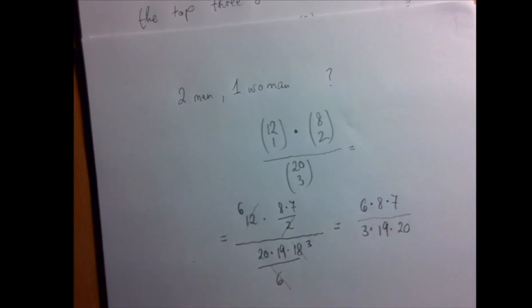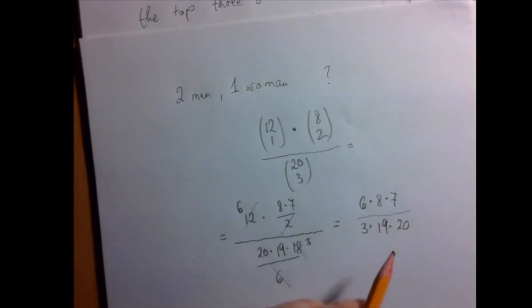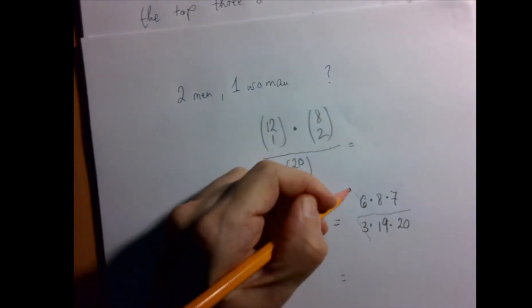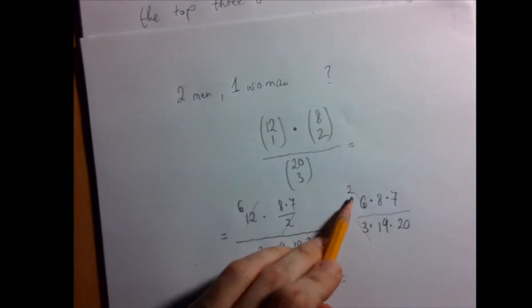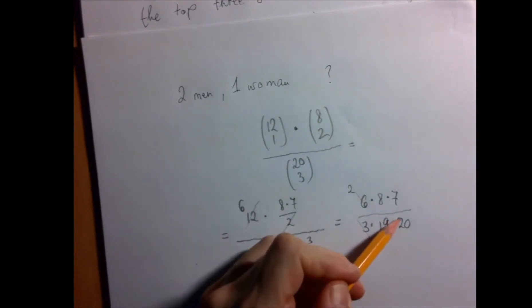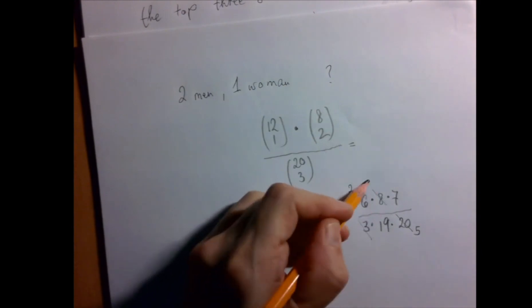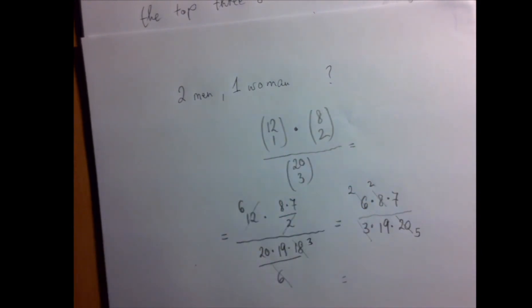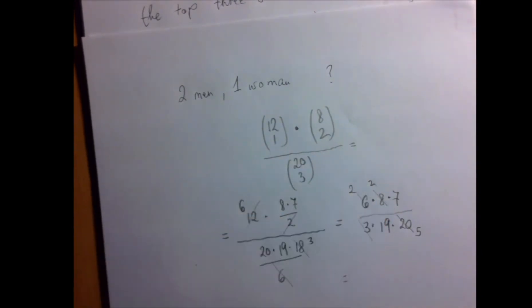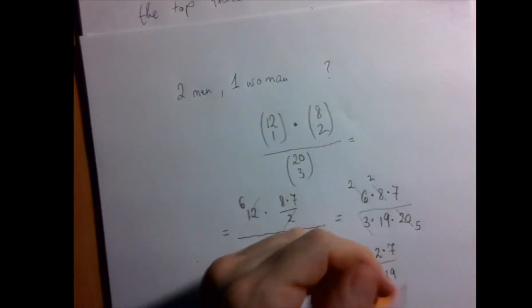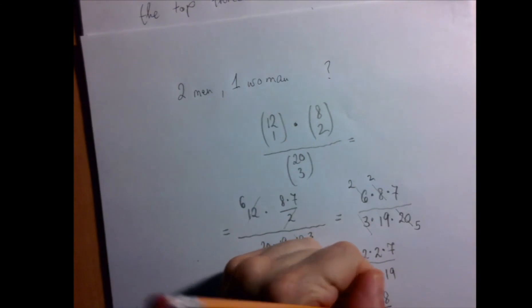19 and 7 are primes that don't share anything in common. So we just have to get rid of the rest. Between 6 and 3, there is a 3. This is 2 times 3. This is 1 times 3. And 20 is 5 times 4. Meanwhile, 8 is 2 times 4. So what we have is 2 times 2 times 7 divided by 5 times 19. So that's 28 divided by 95.